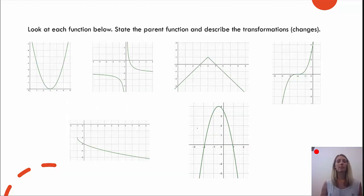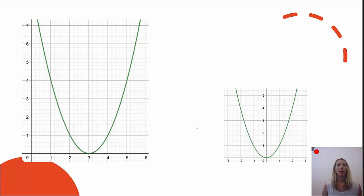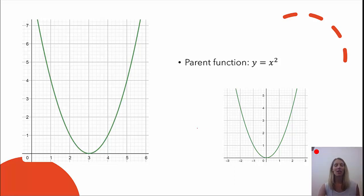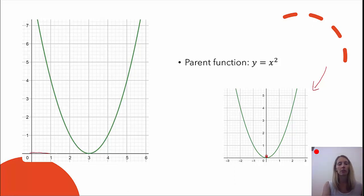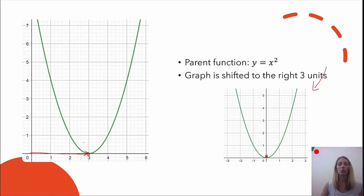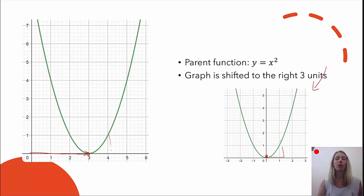Let's look at some examples. Here are six examples — state the parent function and describe the transformations. First, we have our parabola, a quadratic. The parent function is y equals x squared or f of x equals x squared. The vertex on the parent is at zero-zero. Here it looks like the vertex moved, so it shifted horizontally three units to the right. The graph still goes over one and up one like the parent function, and it's not opening down, so there are no reflections. The only transformation for this graph is a shift to the right three units.